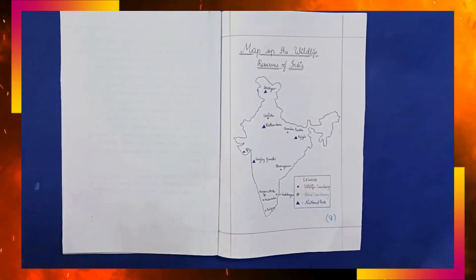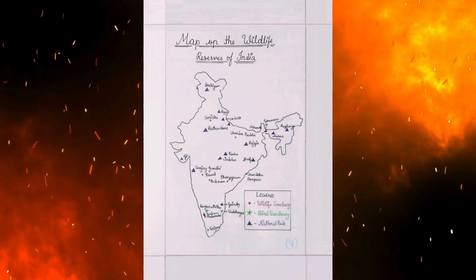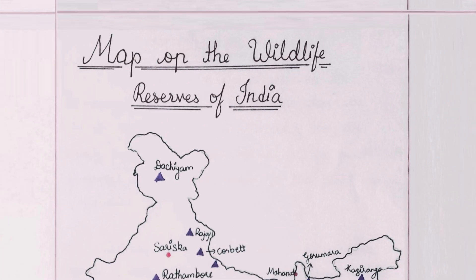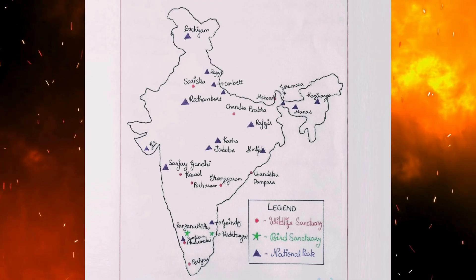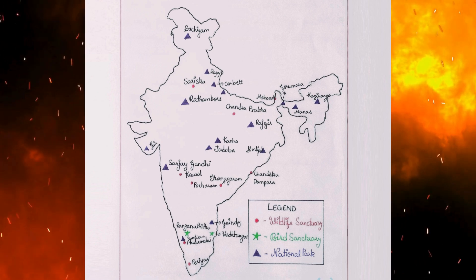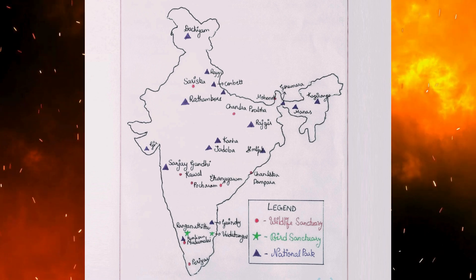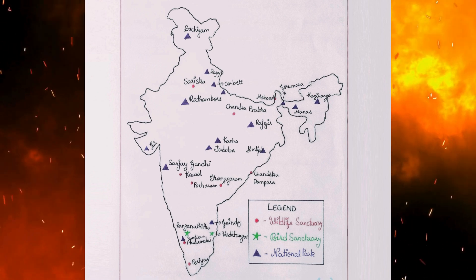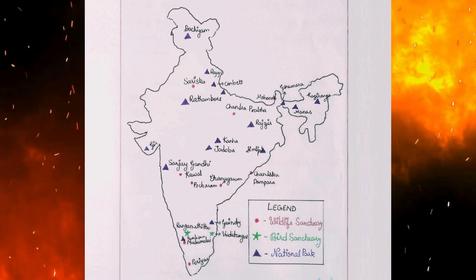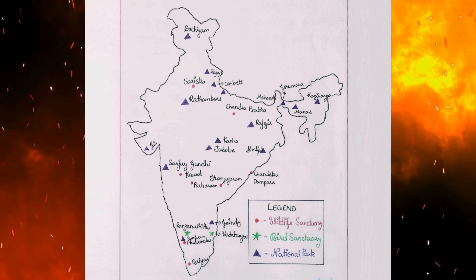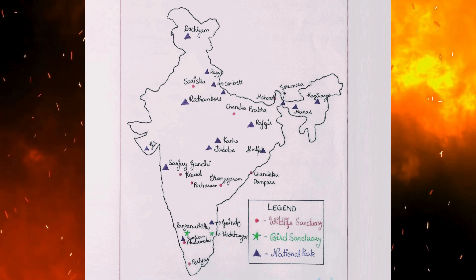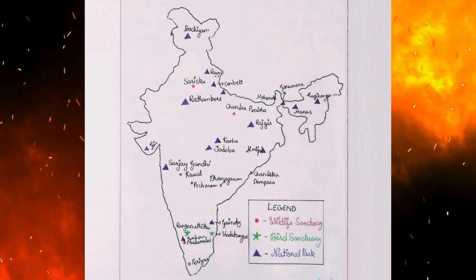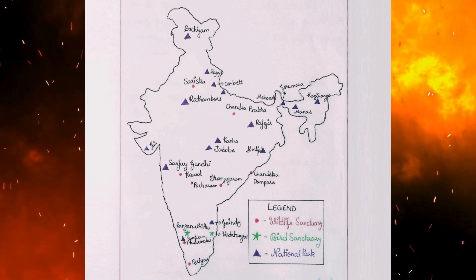Map on the Wildlife Reserves of India. Legend: the red dot represents wildlife sanctuaries, the green dot represents bird sanctuaries, and the purple triangle represents national parks.